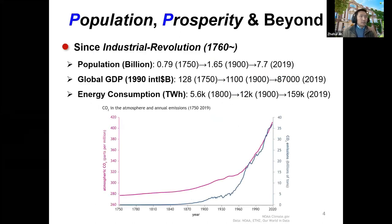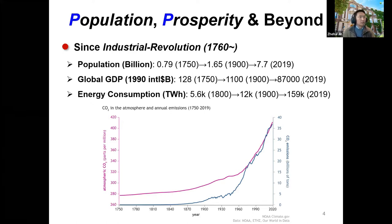Since the industrial revolution, global human population has increased dramatically from around 0.79 billion in 1750 all the way to almost 8 billion people by 2019. Due to the industrial revolution, global GDP has increased tremendously, all driven by stable energy from fossil fuels. The current global energy consumption is almost 30 times what it was in the 18th and 19th centuries.